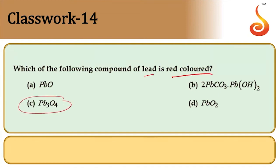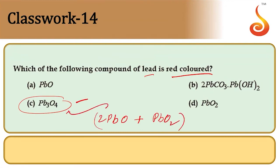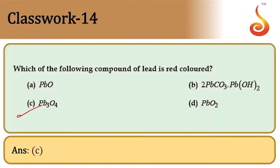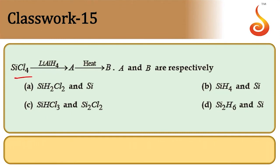Which compound of lead is red-colored? Pb₃O₄ is called red lead — it is red in color and is actually a mixture of 2PbO + PbO₂. Answer is option C (Pb₃O₄).